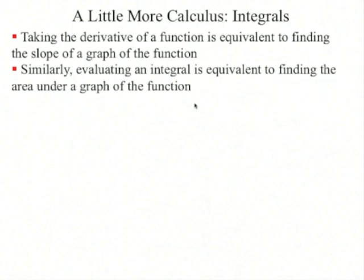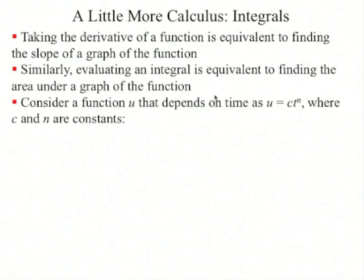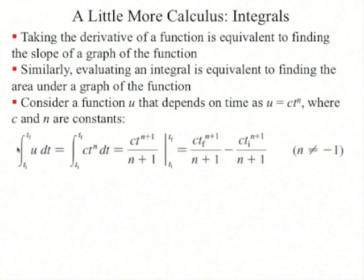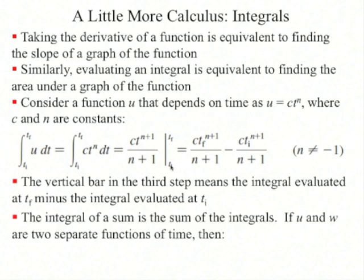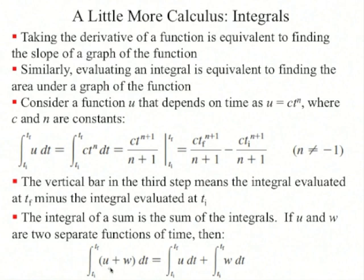Taking the derivative of a function is equivalent to finding the slope of a graph of the function. Similarly, evaluating an integral is equivalent to finding the area under the graph of the function. If you have a function u which is a power law c times t to the power n, you can find the integral of u as c over (n+1) times t to the power (n+1), evaluated from t_f minus t_i. This equation is only valid if n does not equal negative 1. Also, the integral of (u + w) dt equals the integral of u dt plus the integral of w dt.